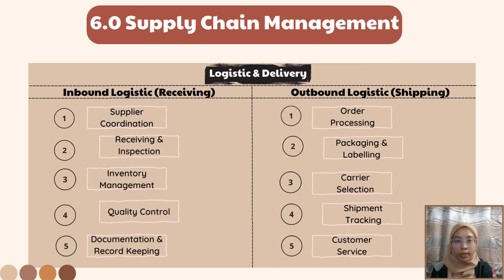Logistics and delivery can be divided into two categories. For inbound logistics, also known as receiving: first, supplier coordination — we regularly contact our supplier to receive updates on order progress. Second, receiving and inspection — when a shipment arrives, we check the packaging to ensure it matches our order. Third, inventory management — we label each product and place it on storage shelves. Fourth, quality control — we carefully check the quality of our products. Fifth, documentation and record keeping — we keep all documents related to our supplier as evidence for the future.